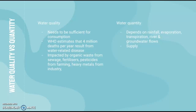Water quality versus water quantity is very important content. Water quality refers to whether water is safe and can be used for drinking — is it contaminated? It needs to be sufficient for consumption. The WHO estimates that 4 million deaths per year result from water-related disease. Water quality is impacted by organic waste from sewage, fertilizers and pesticides from farming, and heavy metals from industry, as well as agrochemical runoff, which can also lead to eutrophication and worsen water scarcity.